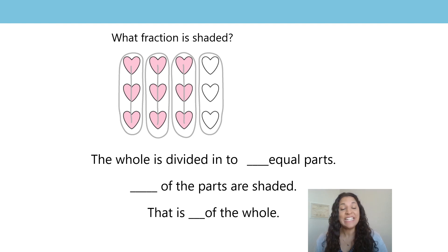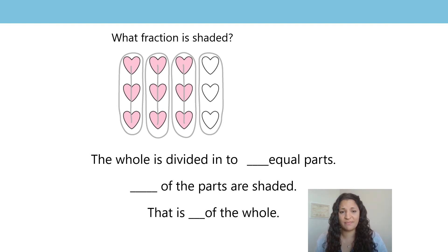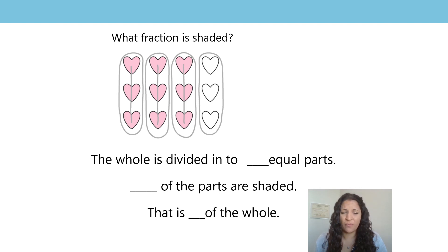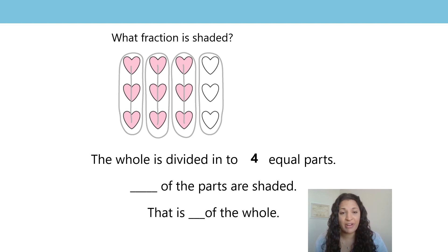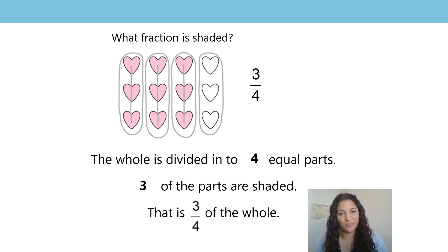Let's do this next question together — it's the same question: what fraction is shaded? We have the same image of the hearts, but this time it's been divided into a different number of equal parts. Let's see how many equal parts: 1, 2, 3, 4. The whole has been divided into 4 equal parts. I can see three of the equal parts are shaded in. That is 3 quarters of the whole — 3 quarters of the hearts are shaded in pink.